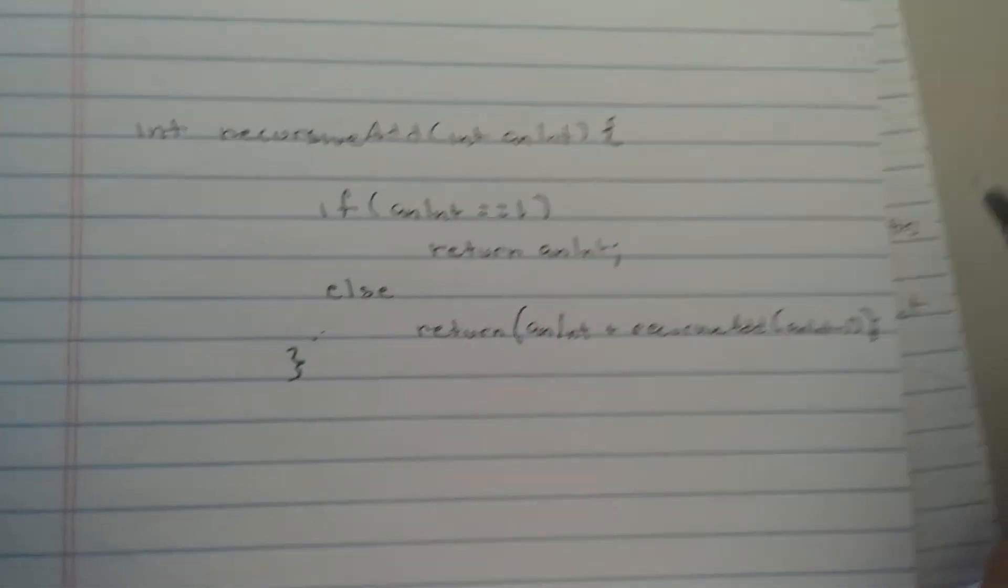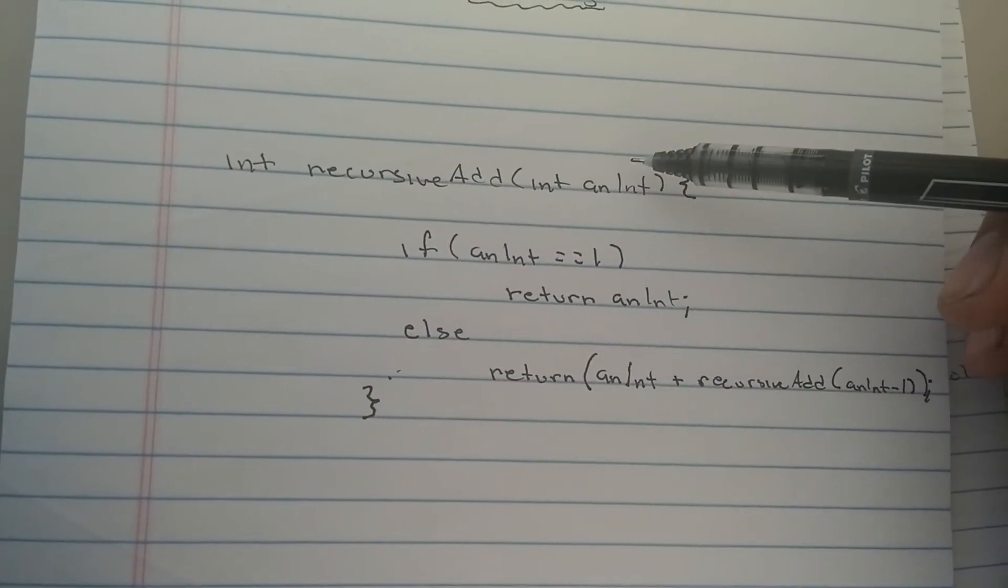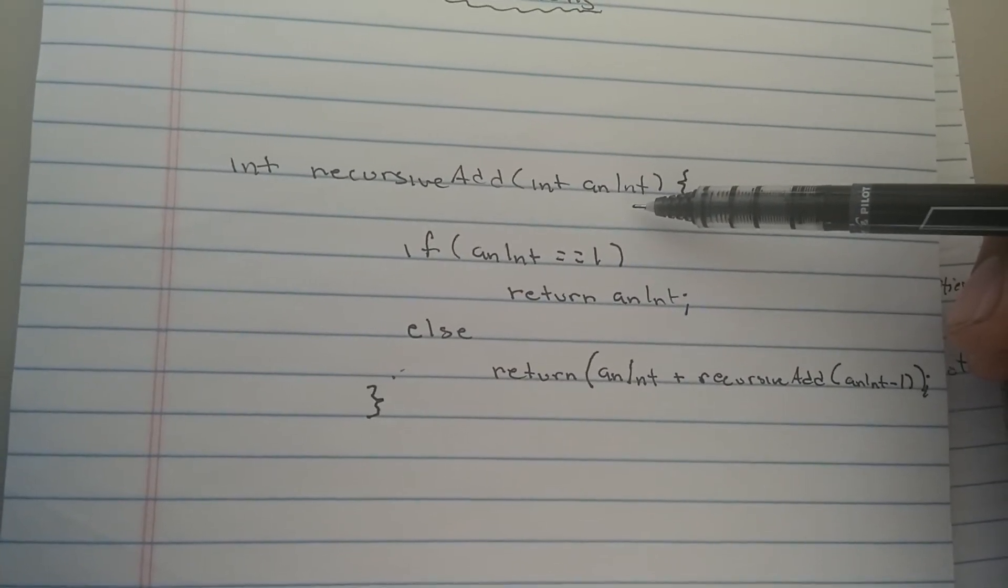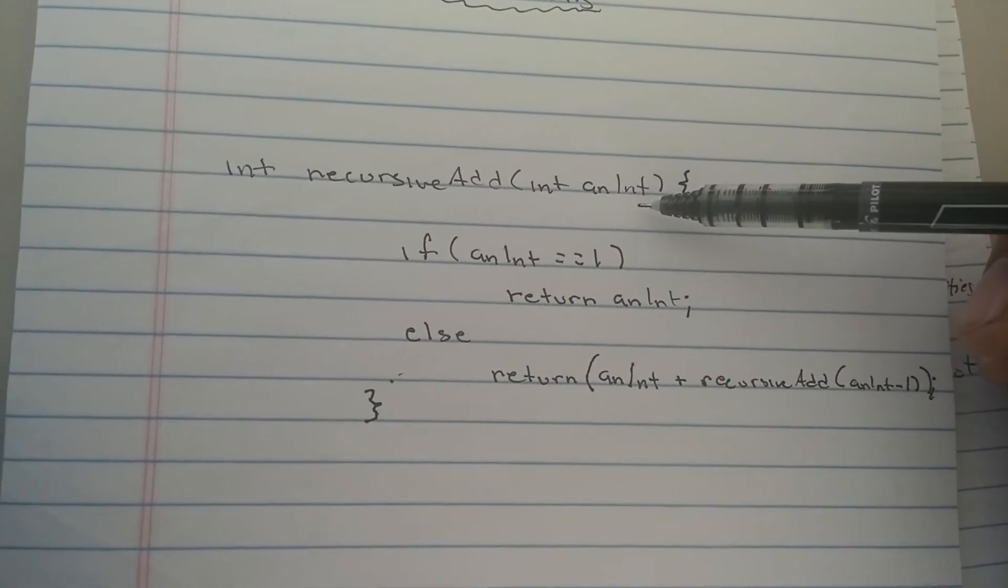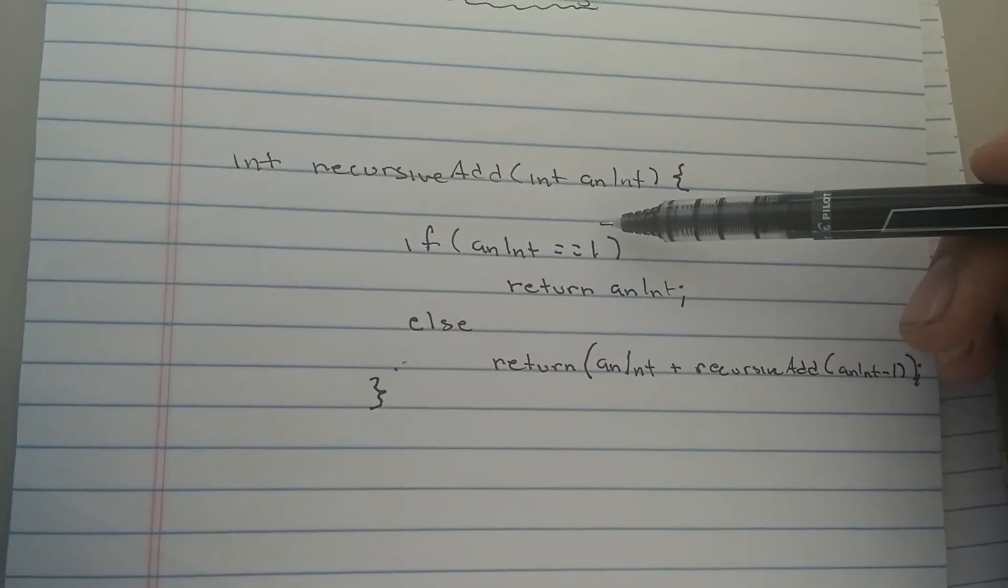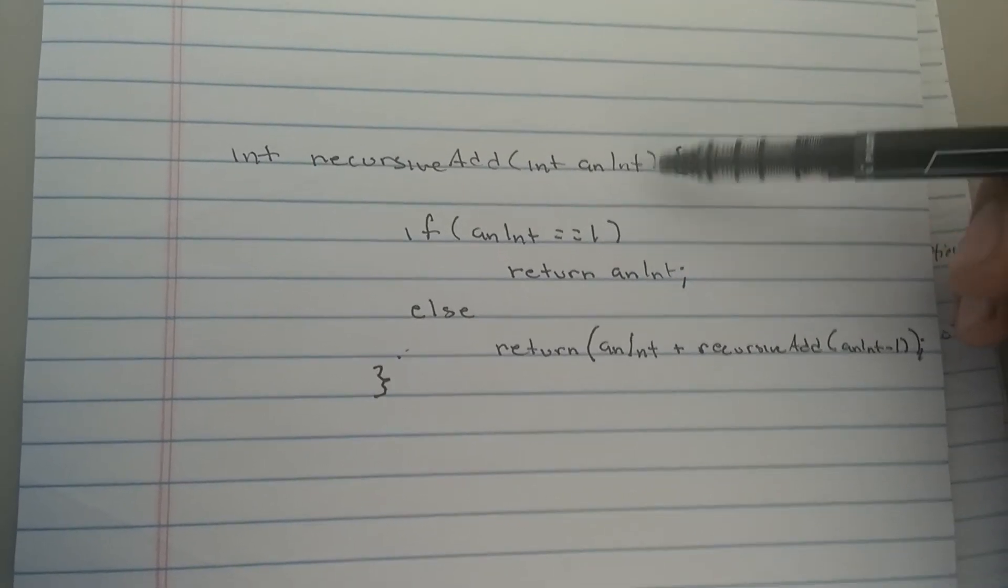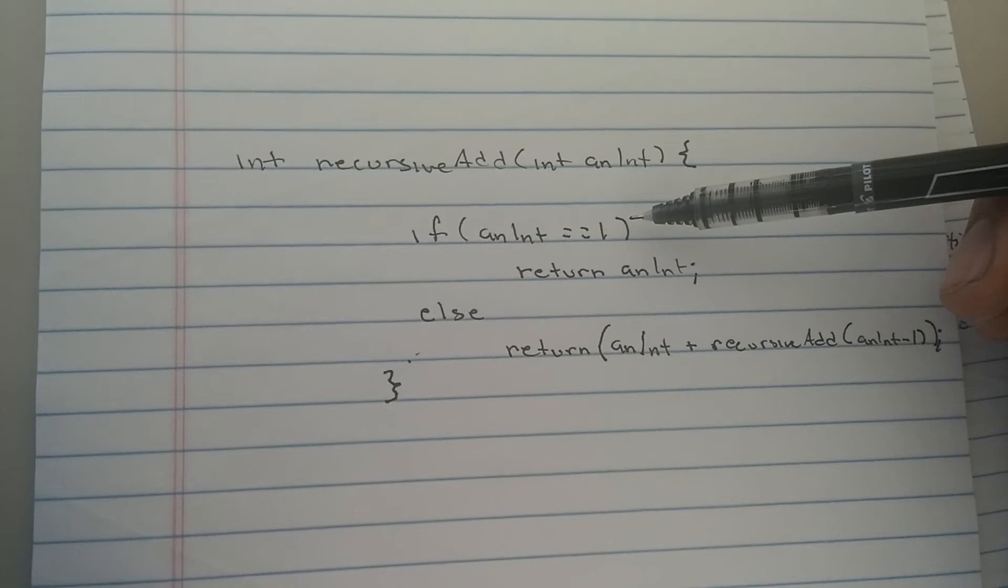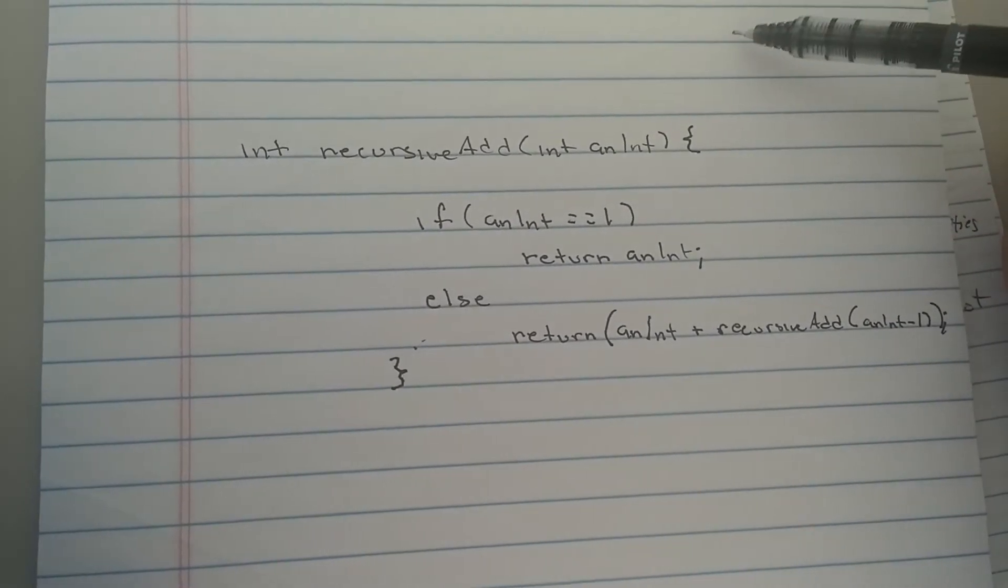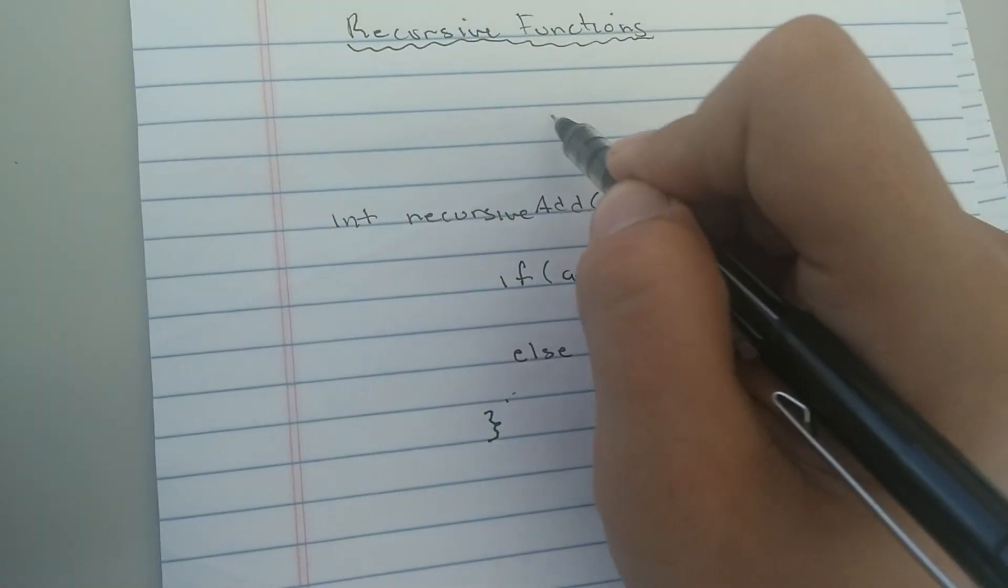So, when we call this function and we pass it an integer, the first thing it does is check to make sure that integer doesn't equal 1. Because what we're trying to do is find the sum of every number, including the number itself, the sum of every number preceding it. So, if it's 1, then the sum of 1 and every number smaller than it is just 1, and then you return an int, and that's your answer. But let's say we passed it the number 5.